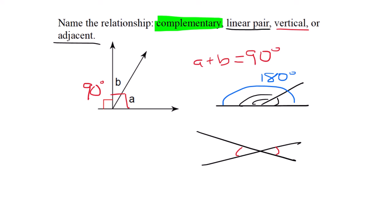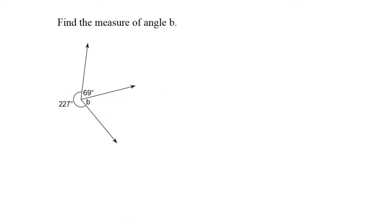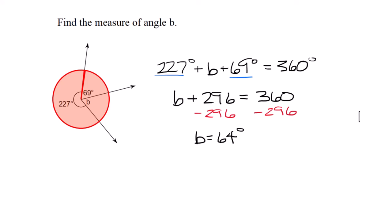This question tests if you understand central angles or that a circle has 360 degrees. Set up 227 plus angle B plus 69 equals 360. Combining like terms, B plus 296 equals 360. Subtract 296, so B is 64 degrees.